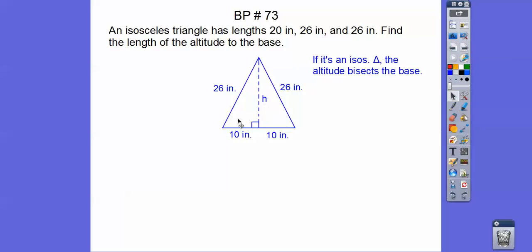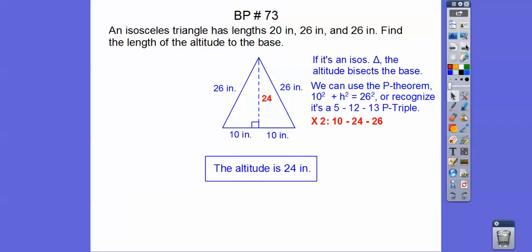Now we have a right triangle. We can do the Pythagorean theorem. We can do 10 squared plus h squared equals 26 squared. Or we can recognize this is a Pythagorean triple. It's a 5, 12, 13 P-triple. This is 5 times 2. This is 13 times 2. So if we multiply 12 times 2, we get 24. So that altitude right there is 24. Make sure you answer the question. It's going to be 24 inches.